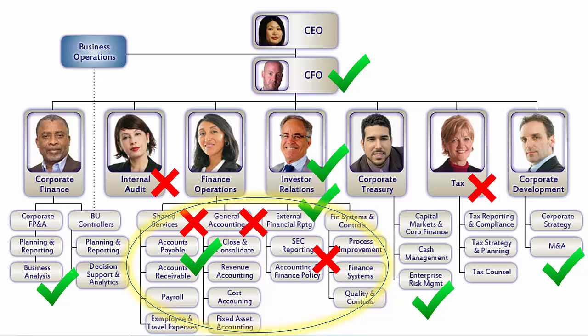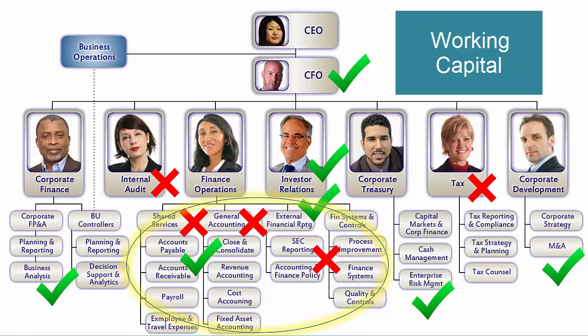By offering customers credit terms — that is, the ability to buy now and pay later — we are impacting cash flows by deferring the receipt of cash. Receivables, along with inventory and accounts payable, make up a group of accounts called working capital. Working capital is necessary in almost every business to conduct operations. However, working capital itself ties up cash, and thus managing it effectively is an important element of finance.